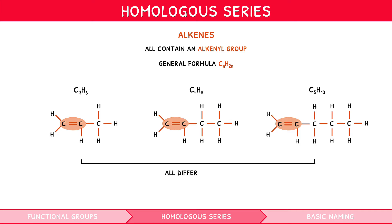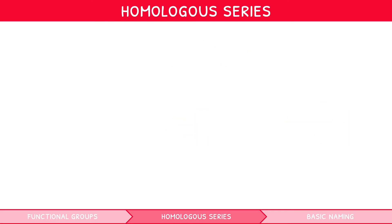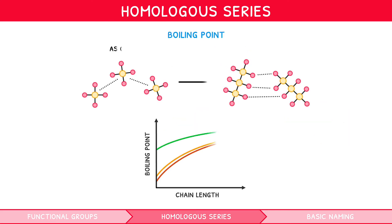Each member differs from its adjacent member by CH2 — i.e. if we add CH2 to the first we get the second, and so on. We cannot demonstrate the chemical and physical properties here, but they fit the rule. It is important to note that since alkanes, alkenes, and alcohols have a degree of similarity in structure, they all share the same trend in boiling point: as chain length increases, the boiling point increases. This concept was explained in the third video of our IB Chemistry Topic 4 video series, so check it out if you're unsure.